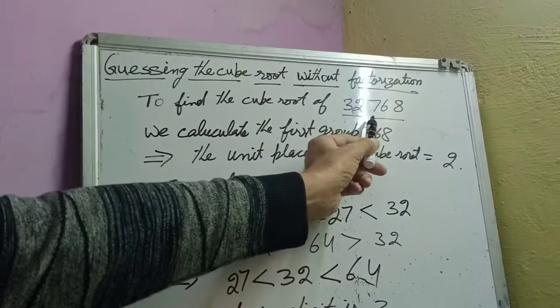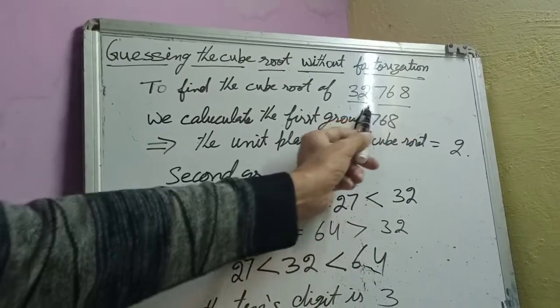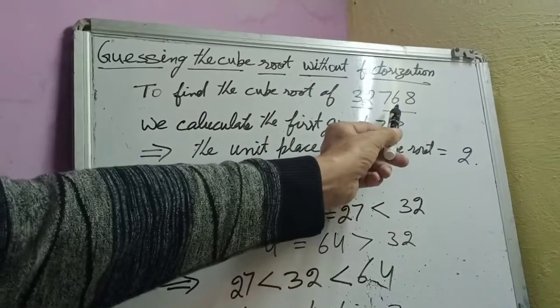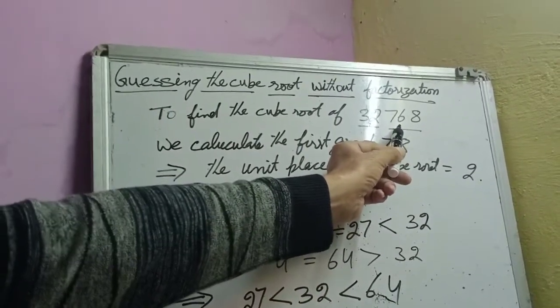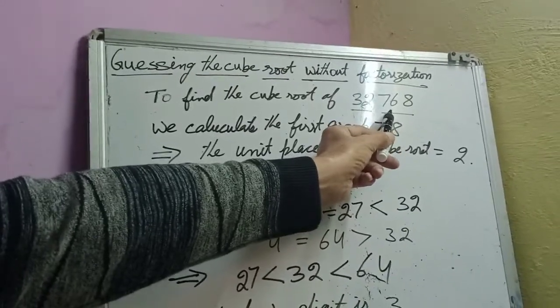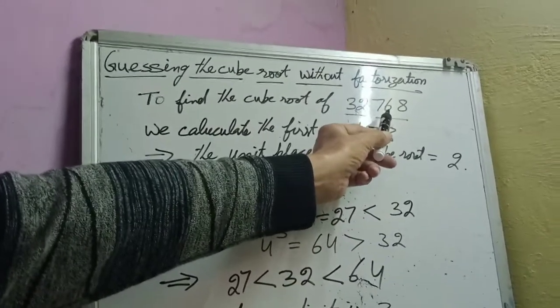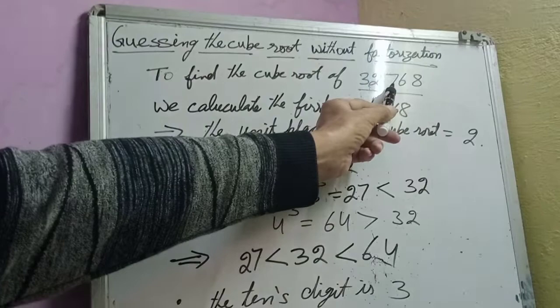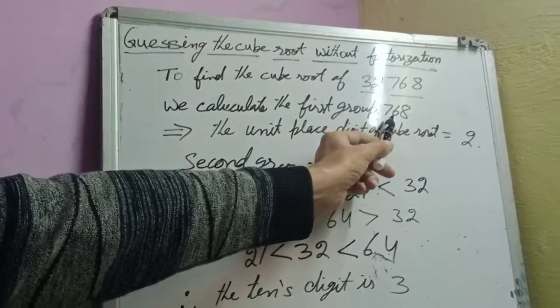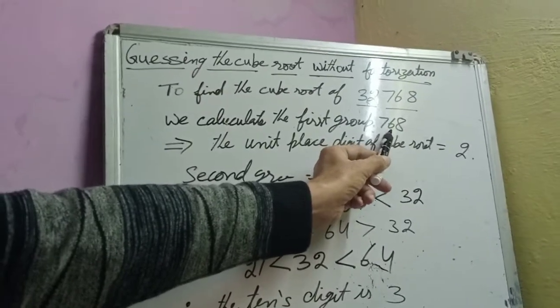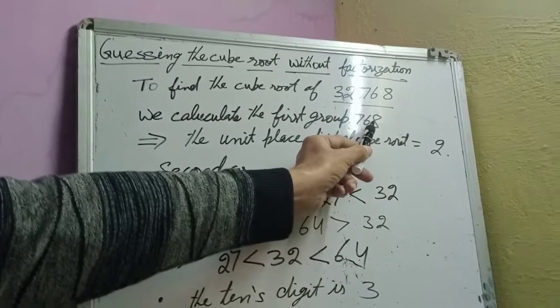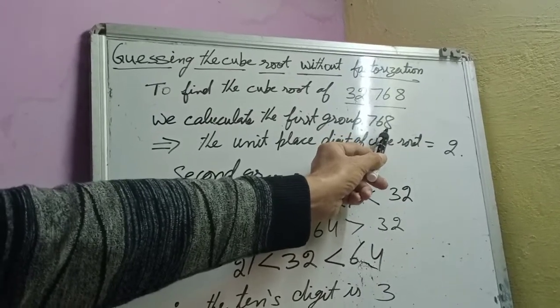This being the first group and this being the second group. Let's guess the unit digit by taking the first group. When we take 768, the first group, what we have to calculate is the number which gives us cube 8.